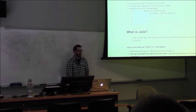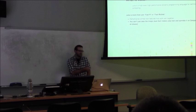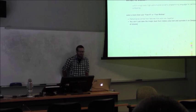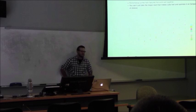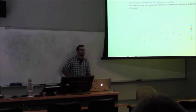So what is Julia? From the website, they say Julia is a high-level, high-performance, dynamic programming language for technical computing. Julia is more than just fast R or fast MATLAB or fast Python. Performance comes from a set of features that work really well together. The developers say you can't just take the magic dust that makes Julia fast and then sprinkle it on R and Python and get the same performance.